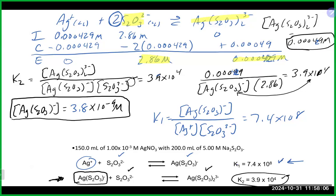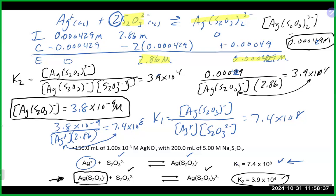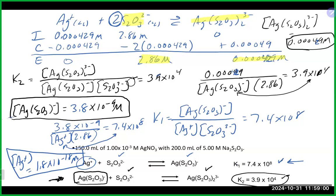Plugging in: 3.8×10⁻⁹ divided by [Ag⁺] times 2.86 equals 7.4×10⁸. Rearranging gives [Ag⁺] = 3.8×10⁻⁹ divided by (7.4×10⁸ times 2.86), which equals 1.8×10⁻¹⁸ M. This is a very small value for the free silver ion, which is exactly what we'd expect for a complex ion equilibrium.